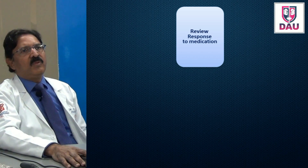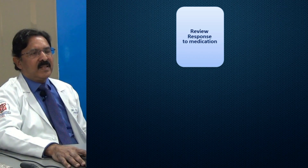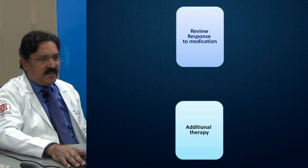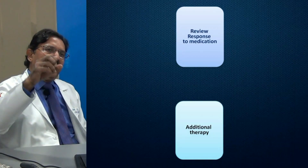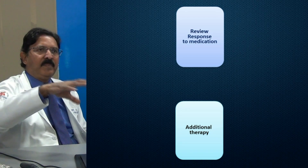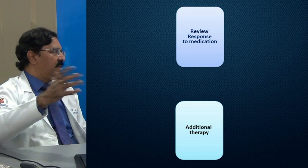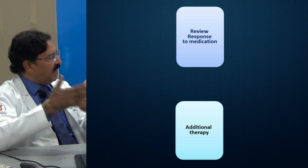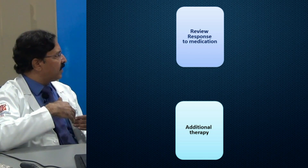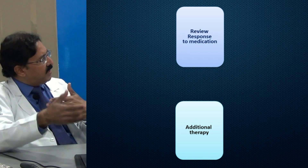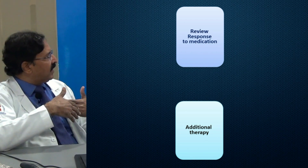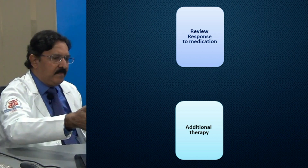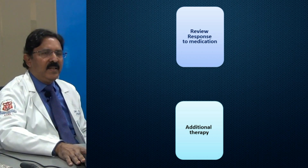Most patients with frequency are compliant with their treatment because they suffer because of it. If you think the therapy you gave has been sub-optimal or less effective, you can give additional therapy. For example, if you gave one anti-muscarinic, you can change to another or add a beta-agonist medication. You can step up the medication — that's what I mean by additional therapy.